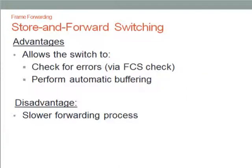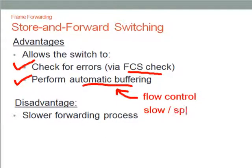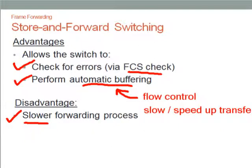Now we can compare the advantages and disadvantages of store and forward switching. The advantages are: it allows the switch to check for errors using the FCS checksum before transmitting the frame, and it is able to perform automatic buffering, meaning if the information flows too quickly it can slow down the information. However, the disadvantage is that it is generally slower than cut-through switching because of all these checks.